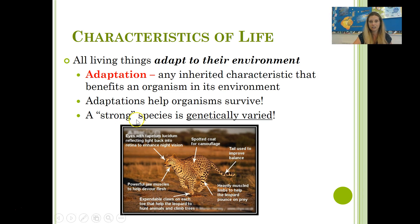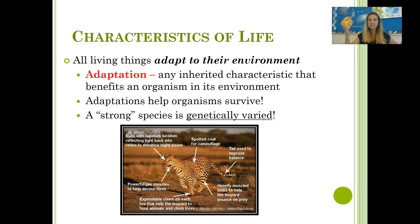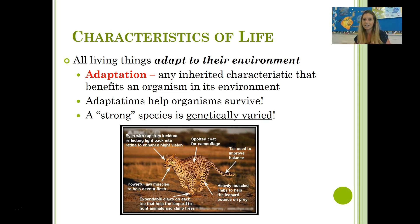A strong species is one that is genetically varied, with a lot of genetic differences amongst the traits in a population. Think of a crop of corn: if it's all genetically identical, they are all susceptible to the same things. If a certain insect appeared, the entire crop would die. But if the crop was genetically varied, some might be susceptible to the insect while others would be resistant — so if that insect appeared, hopefully some of the species would survive.